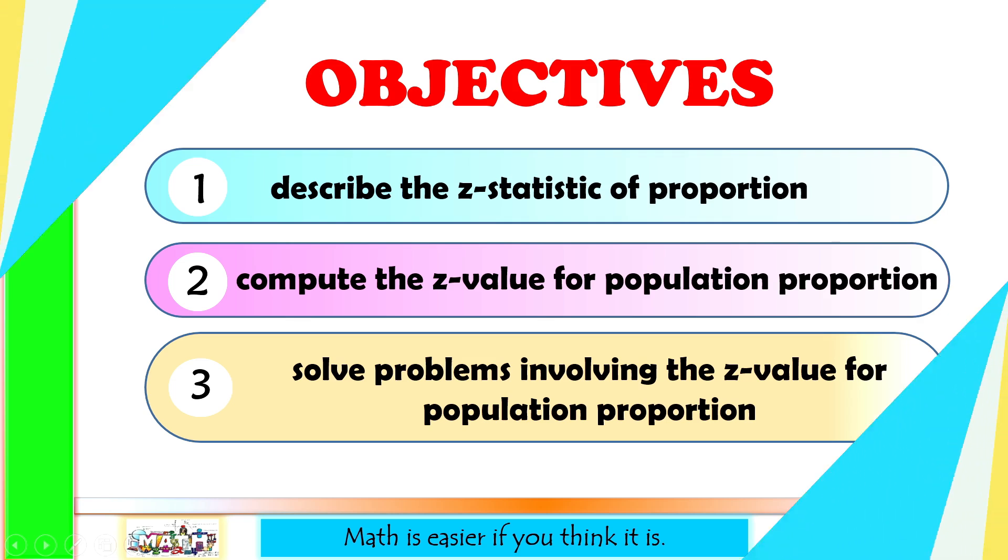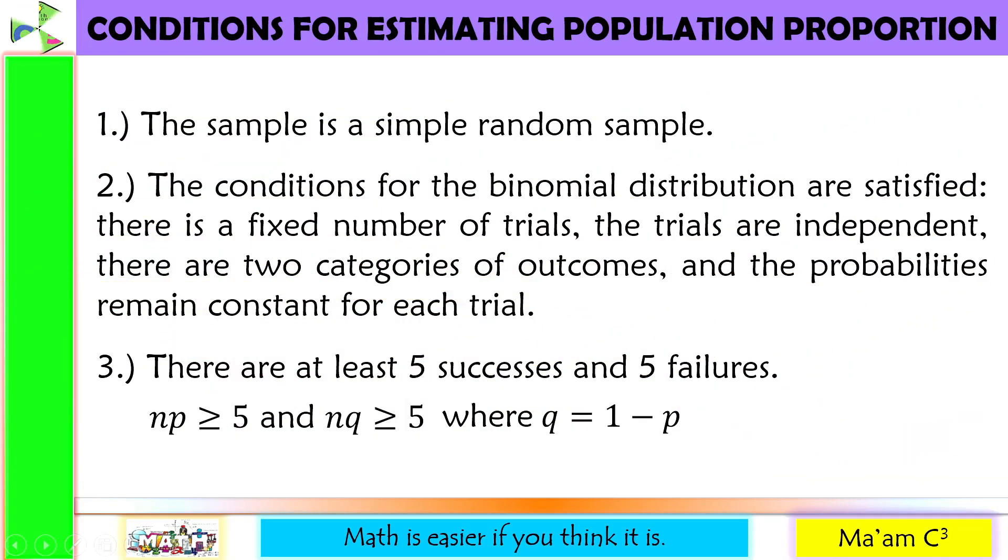Let's have a quick review. Here are the conditions for estimating population proportion. Make sure each situation meets these conditions. Number 3 here will determine if the sample size is sufficiently large. If it is, then we can apply the central limit theorem and use the normal distribution to model the sampling distribution for the sample proportion. Hence, we can use Z-test. By the way, other books use greater than or equal to 10 or greater than or equal to 15. Make sure you follow the instruction of your teacher.